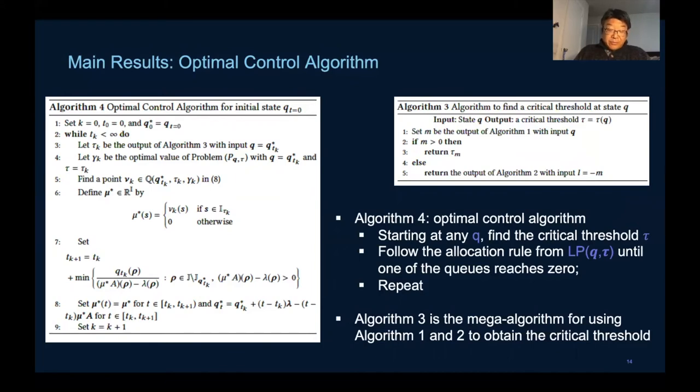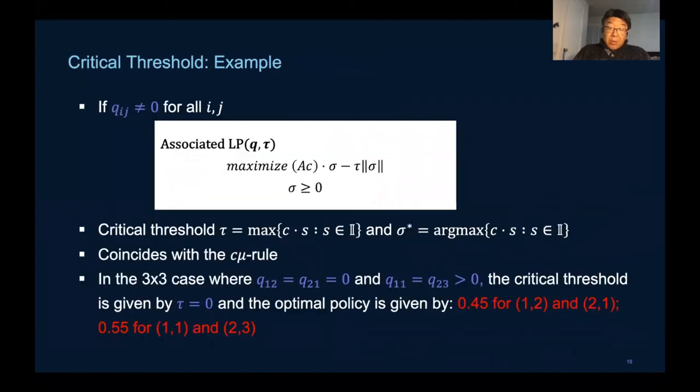When all of the queue lengths are strictly positive, the policy actually coincides with the C-mu rule. This is consistent with the two by two optimal results previously mentioned.